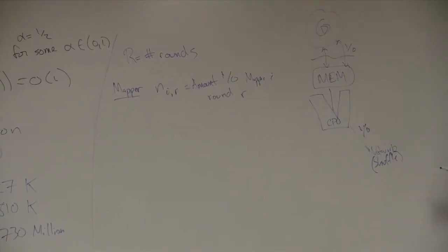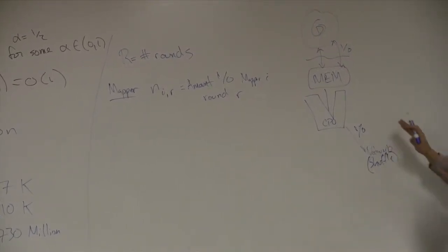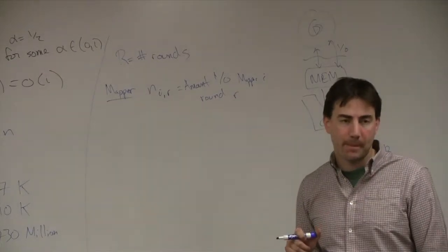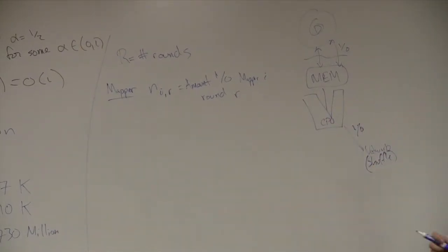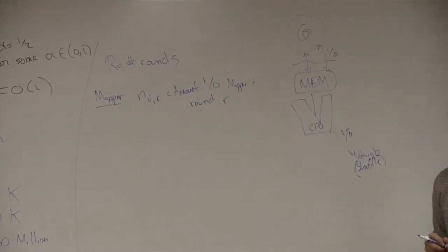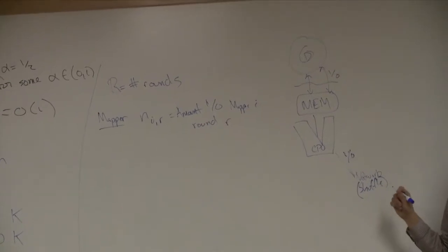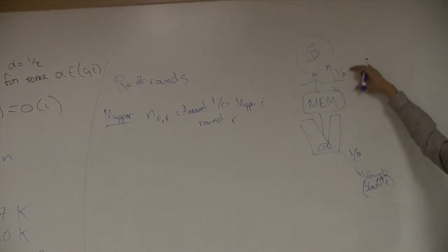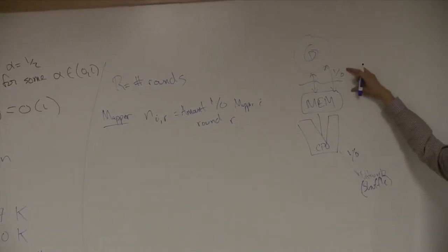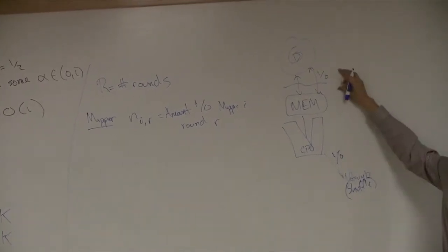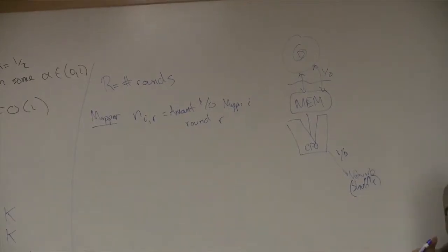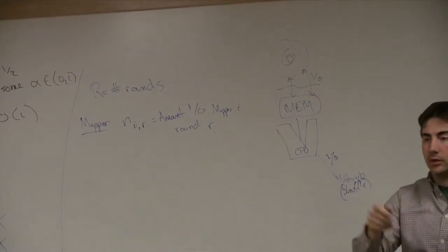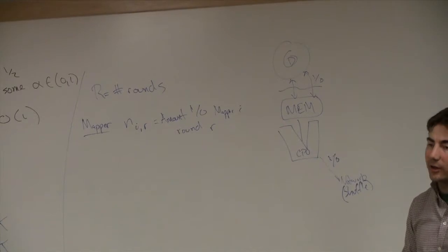The IO in the shuffle is not necessarily writing to disk - it's communication between different nodes. This has to do with the bandwidth of the network as opposed to disk IO cost. Some would argue you can make a network faster than disk IO. They may be on roughly the same order of magnitude. So here we're counting all IOs.